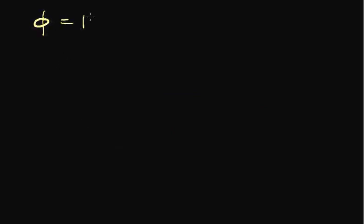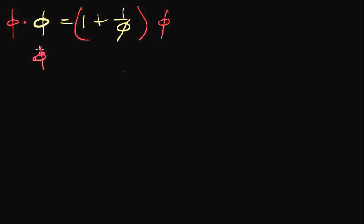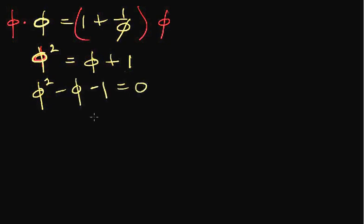We have phi = 1 + 1/phi. Multiplying both sides by phi (phi is not zero), we get phi squared = phi times (1 + 1/phi). Using the distributive property: phi × 1 = phi, and phi × (1/phi) = 1. So phi squared = phi + 1. Subtracting phi and 1 from both sides gives phi squared minus phi minus 1 = 0. That means phi is a solution to the quadratic equation x² - x - 1 = 0, which has two solutions.